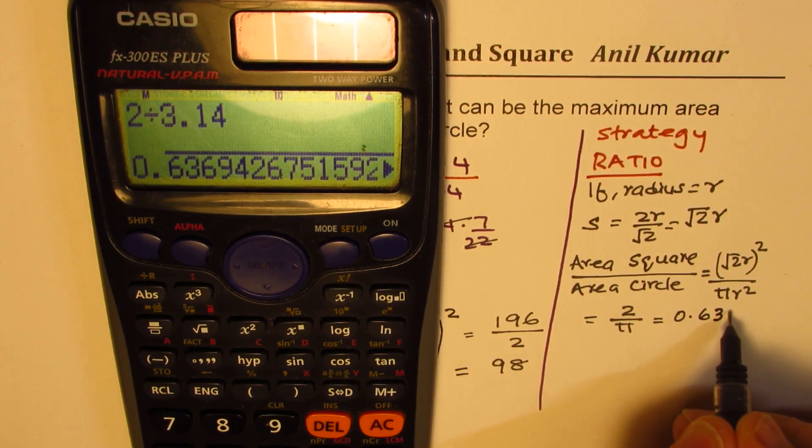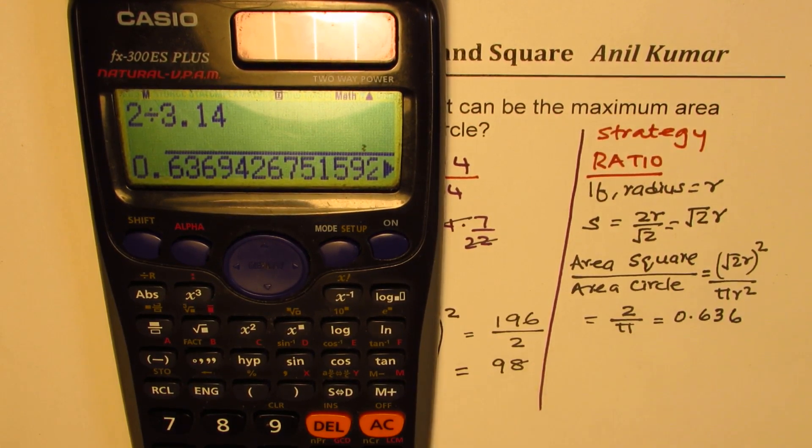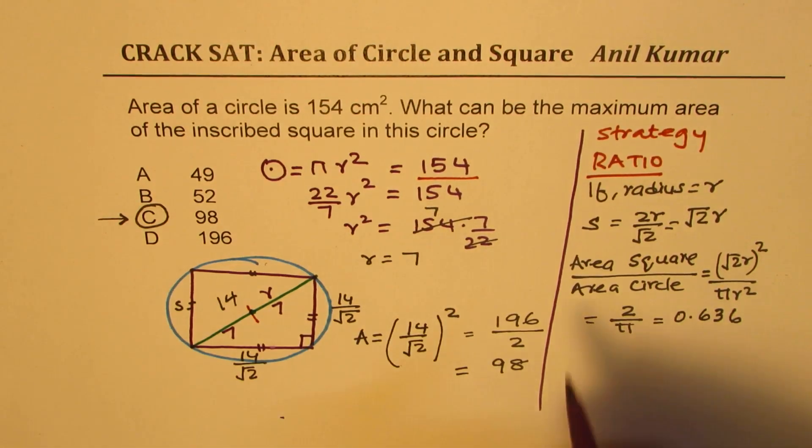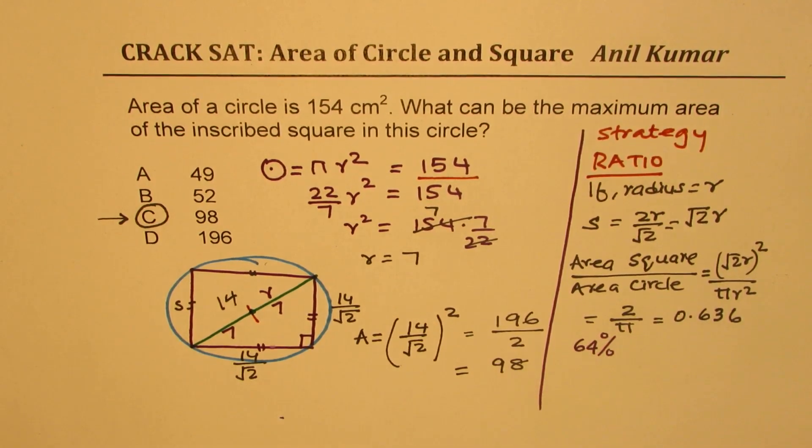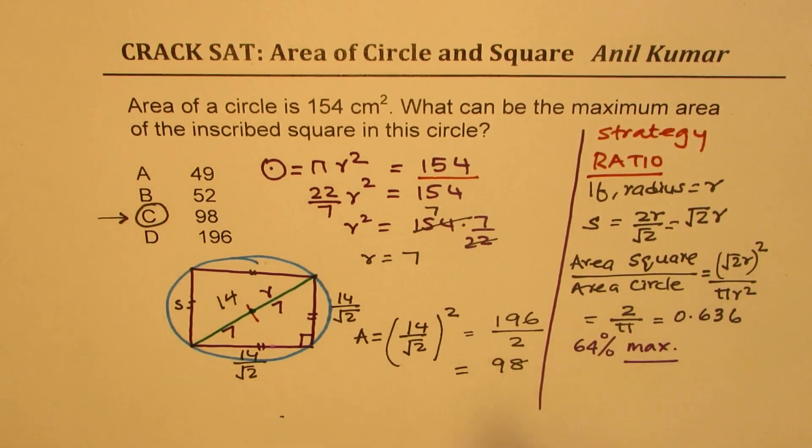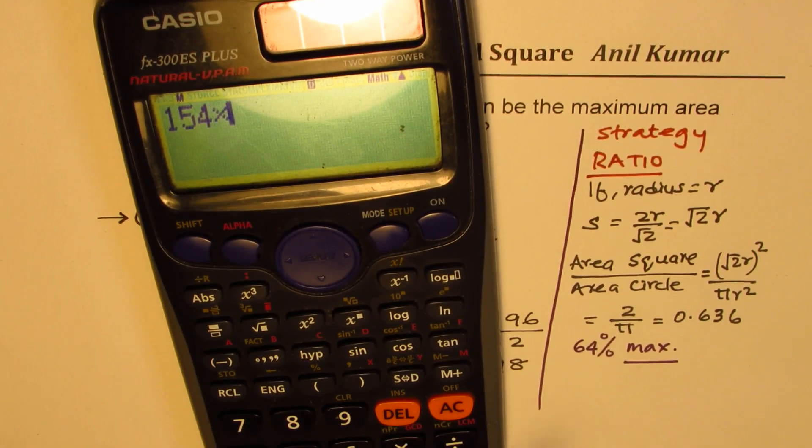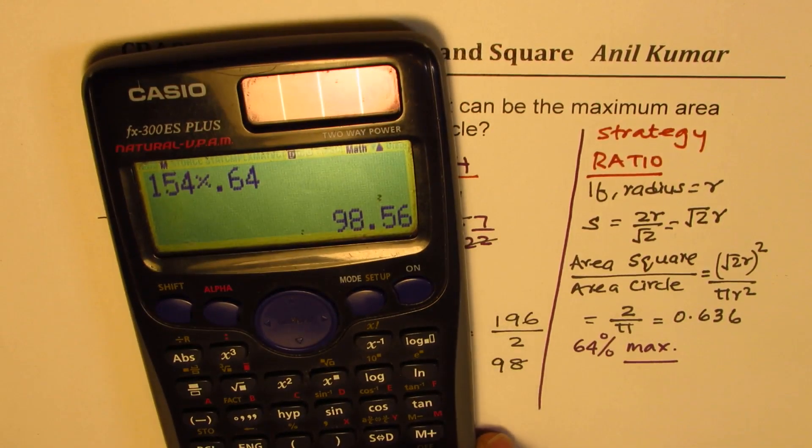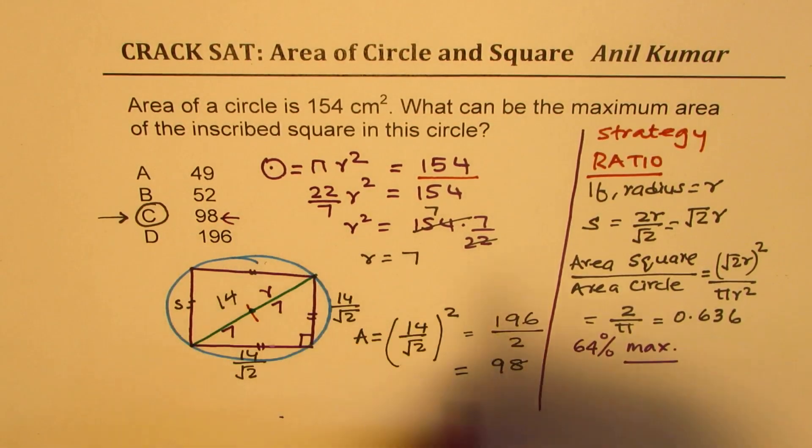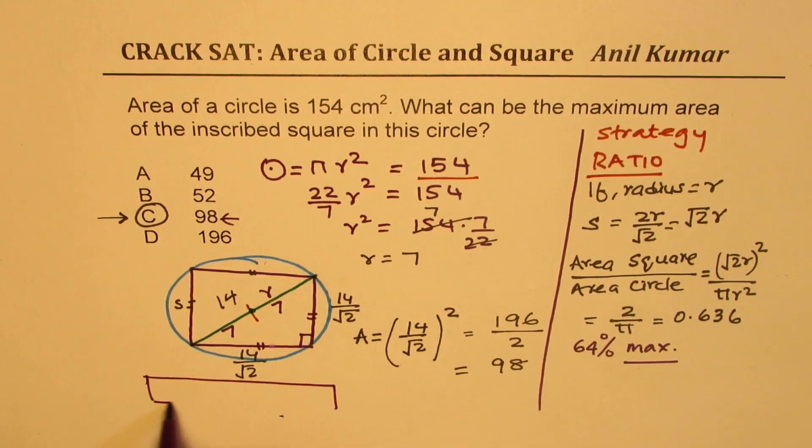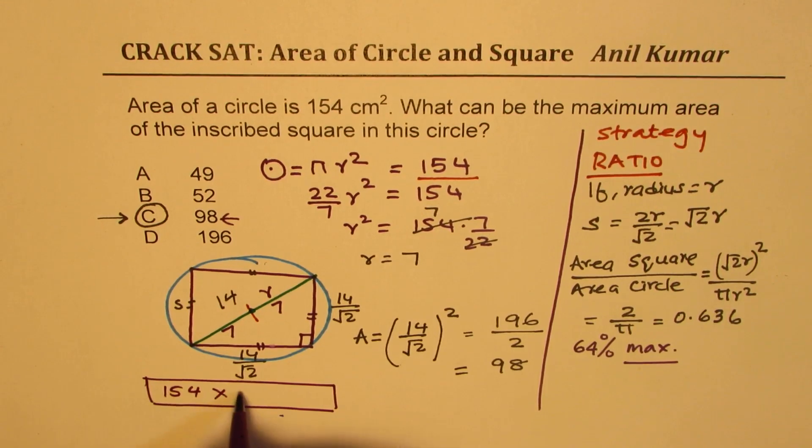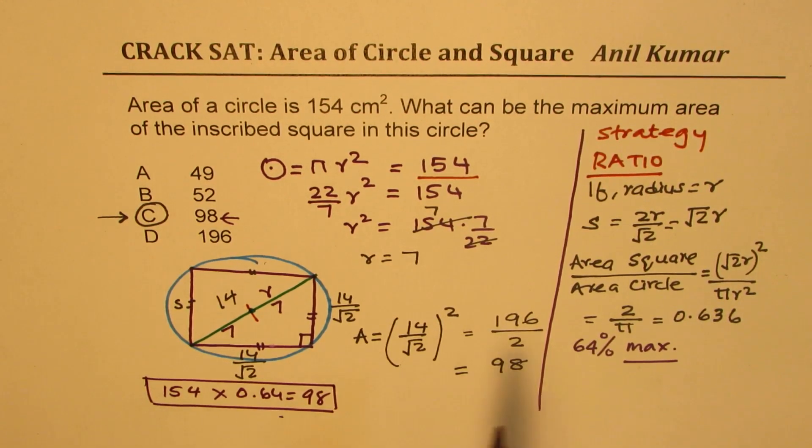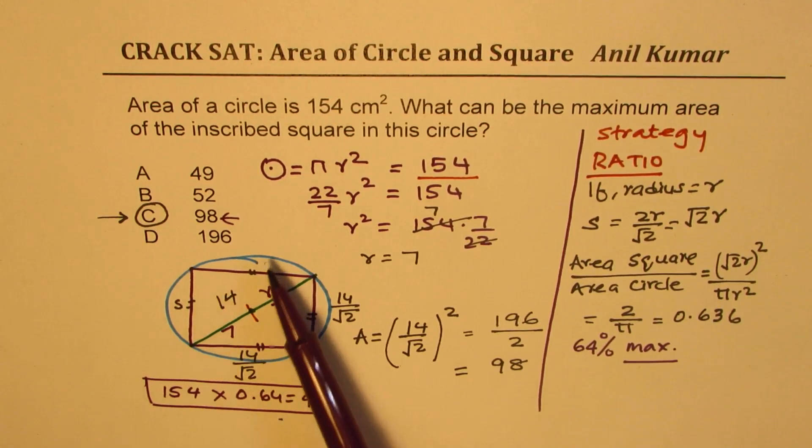So remember this number, this is good number to remember. It is 64% maximum. So that is to say, this number, 0.64, when multiplied by 154, will give you a result. Let's check. If I do 154 times 0.64, our estimate is going to be a bit higher, 98.56. But we get an estimate. So the trick here is, whatever is the area of the circle, in this case, it is 154, multiplied by 0.64 to get the answer, which is 98. So remember that the ratio of area of square to that of circle is that much.